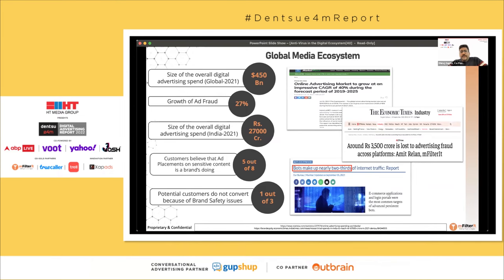Machines have already taken over the digital world — it's like a recap of Terminator. The amount of traffic online is machine-driven; it's far more than human traffic. According to a Hindu Business Line article from September 5th, 2021, two-thirds of traffic on any website is bot traffic. These bots trigger ads that you are paying for, and you end up spending money on ads being seen by machines with no benefit from human interaction.